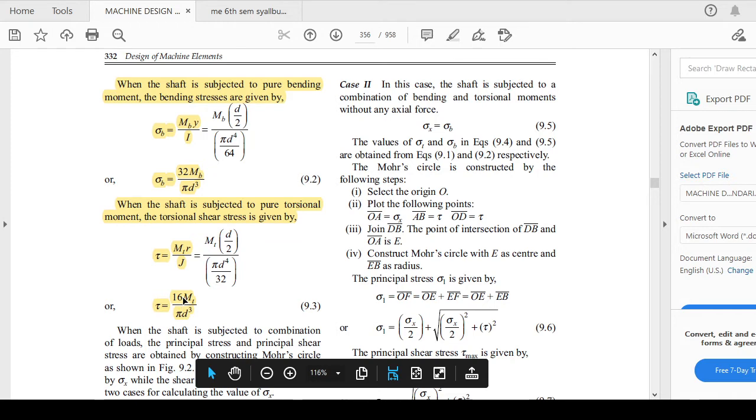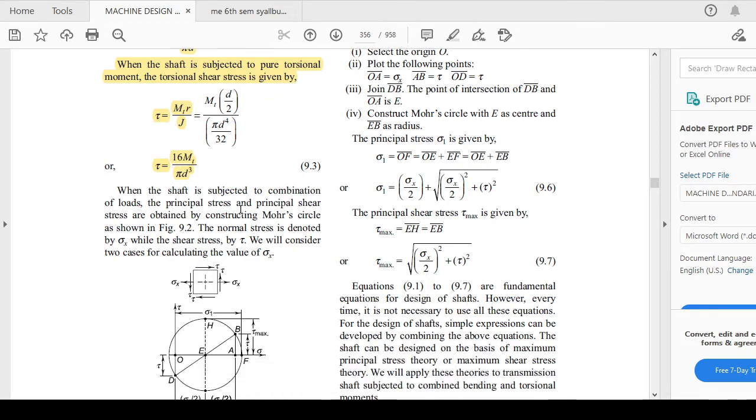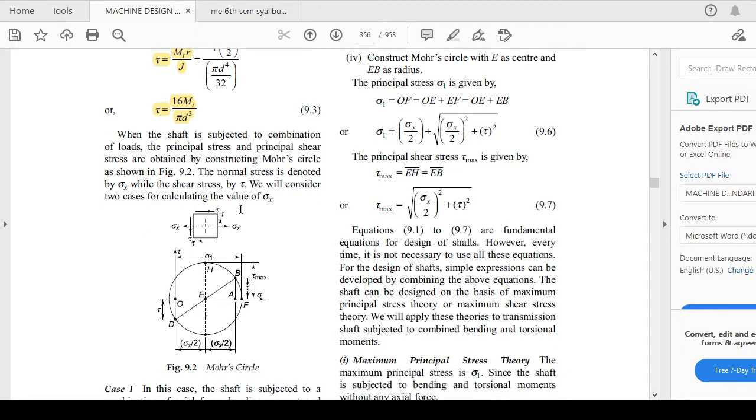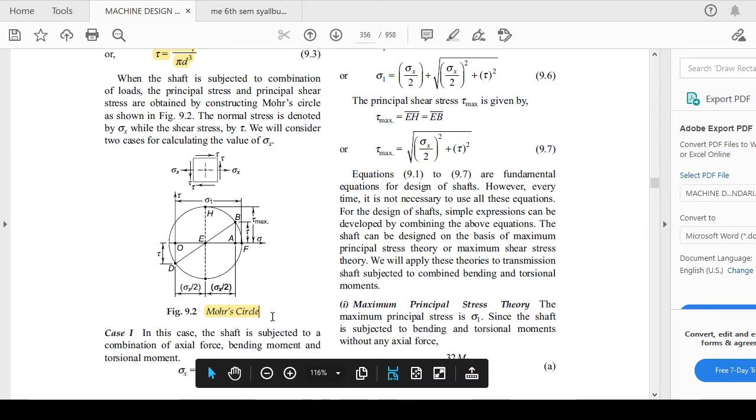Now let us combine all these stresses and calculate the equivalent stresses, or principal shear stress, or principal stresses σ₁ and τ_max. For this, you can derive it with the help of Mohr's circle. As you can see in the picture, it depends on different cases.